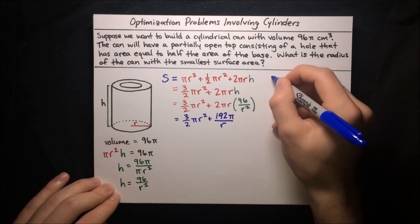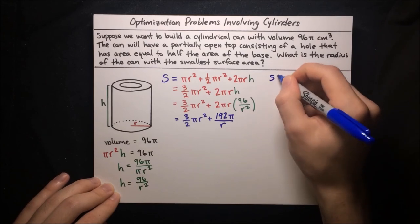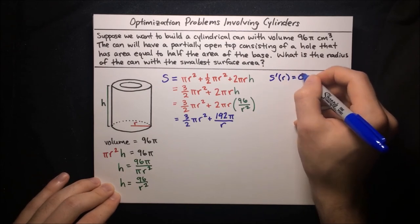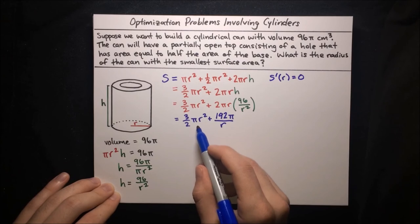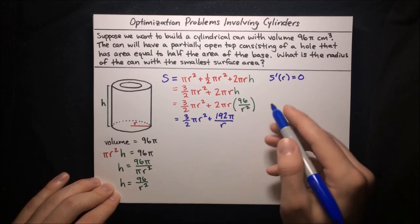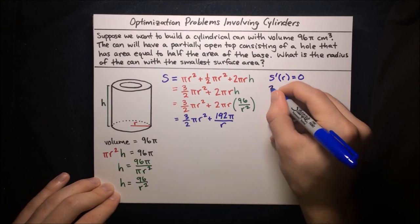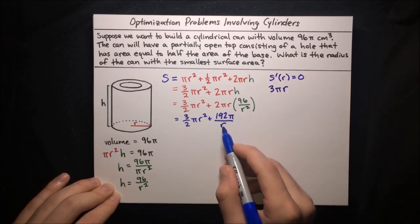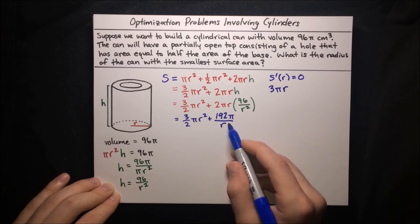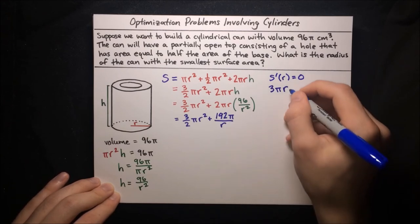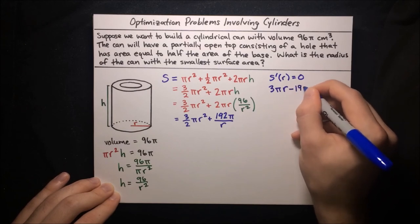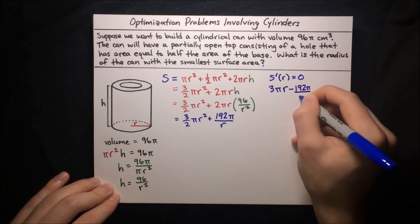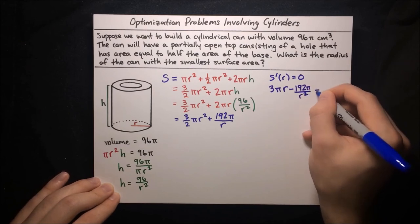Finding the stationary points where S prime of r equals zero: the power rule on three-halves pi r squared gives three pi r. And 192 pi over r is 192 pi times r to the negative one, so the power rule gives minus 192 pi over r squared. Setting S prime equal to zero: three pi r minus 192 pi over r squared equals zero.